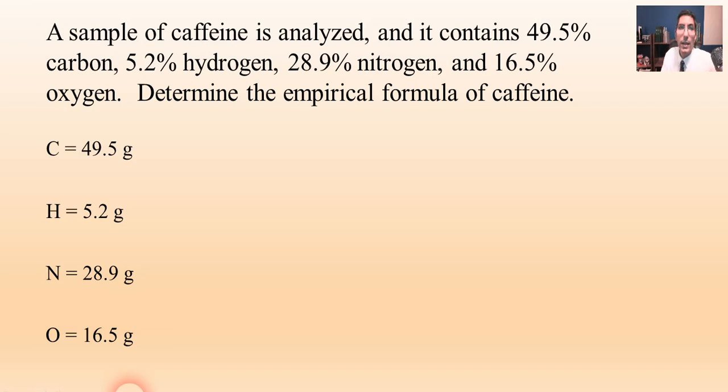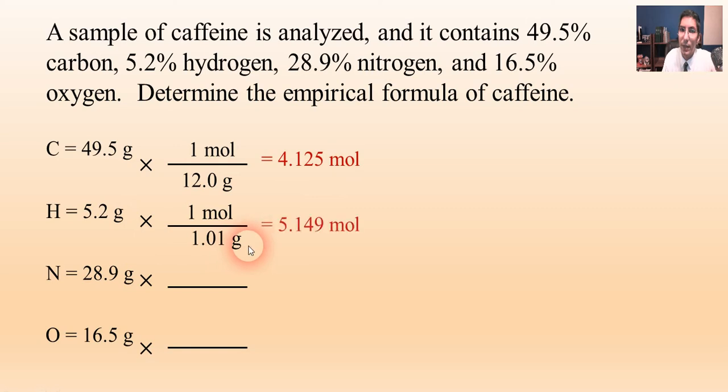The next thing we do is take all of these gram values that we've just written down and convert them to moles using the atomic mass from the periodic table. So in the case of carbon, we're going to put one mole over 12 grams and we get that's 4.125 moles. For hydrogen, it's about 1.01 grams, and so that's about 5.149 moles. For nitrogen, it's one mole for every 14 grams, so that's 2.064 moles. For oxygen, it's very close to 16 grams, so we divide that 1.031 moles. Now we've converted all these gram values to moles.